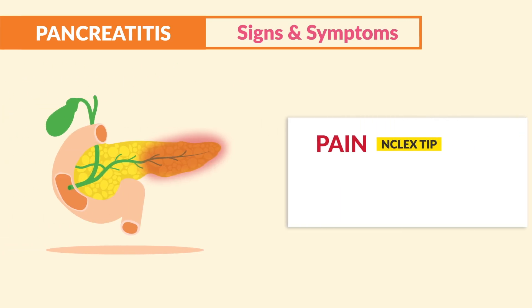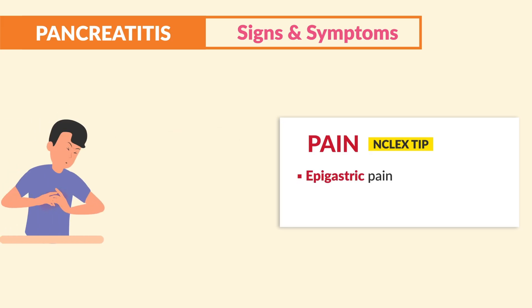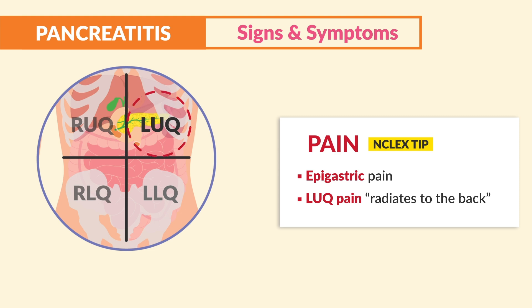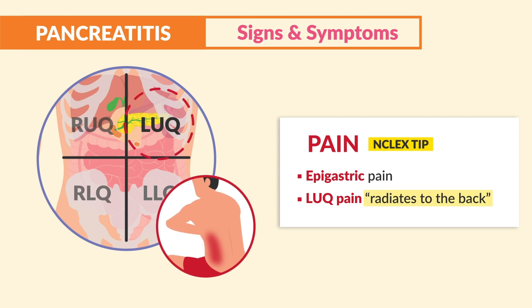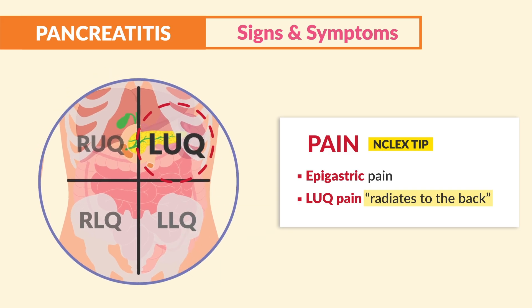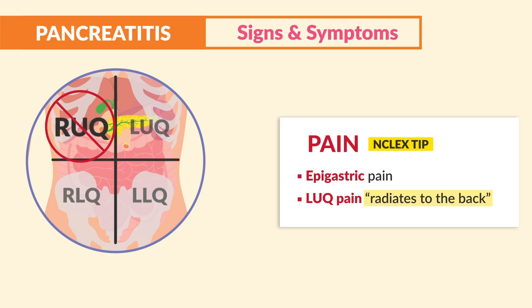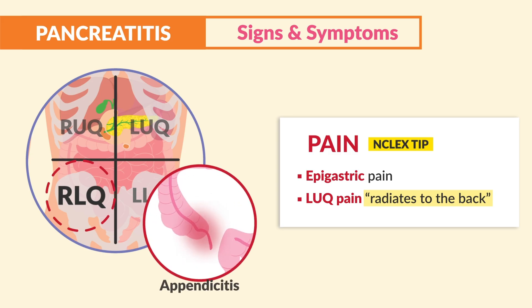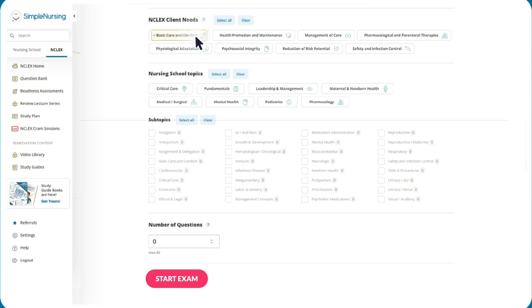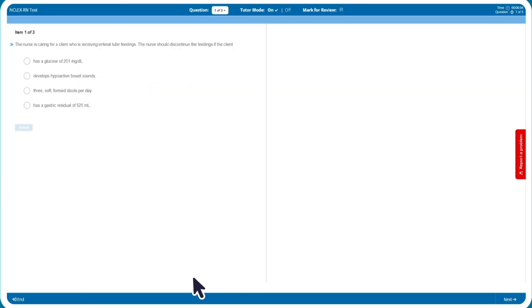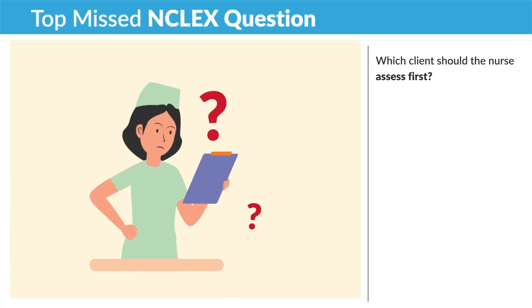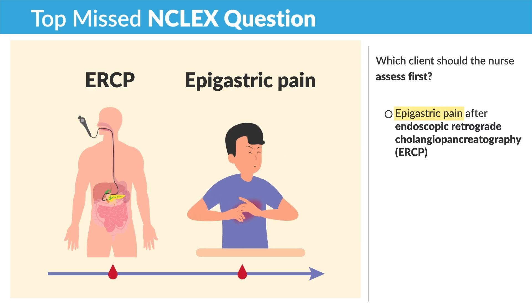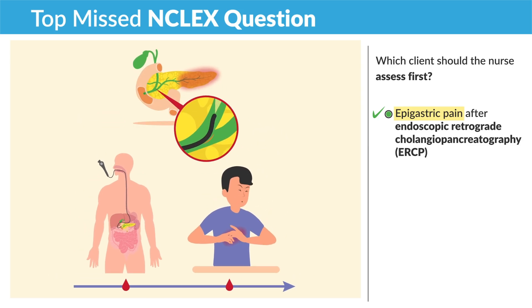In terms of signs and symptoms, pain is a huge NCLEX tip. Write this down: epigastric pain like heartburn in the left upper quadrant that radiates to the back — huge key terms. Don't let the NCLEX trick you: it's not right upper quadrant pain radiating to the shoulder, which is typical of gallbladder inflammation called cholecystitis, and it's not right lower quadrant pain with rebound tenderness, which is typical of appendicitis. A top missed question: which client should the nurse see first? A client with epigastric pain after an ERCP — think the double E's. Epigastric pain from an ERCP can erupt the pancreas, causing pancreatitis.